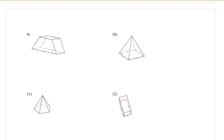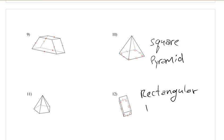Number 10, again, it's a square pyramid. Number 12 is a rectangular pyramid, not pyramid, excuse me, prism. Rectangular prism.